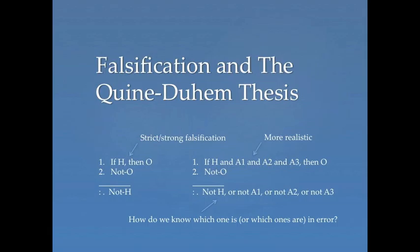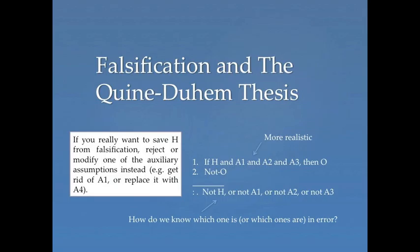But the Quine-Duhem thesis shows us that that's not really realistic. That's not actually how hypothesis evaluation takes place. Look at the schema on the right. Whenever we test a hypothesis, we never test it in isolation. We need a whole bunch of claims that together make a prediction. So when the prediction fails, it turns out to be false. All we know is that the problem might be with H itself or with one of the auxiliary assumptions. Quine goes on to say that hypothesis evaluation is not a rational process. Rather, it's just subject to pragmatic considerations. If it's useful for you to keep H around, then just modify some of your auxiliary assumptions. Give up some of the other beliefs in your web of beliefs. You can go ahead and keep the core claims if it suits your purposes.